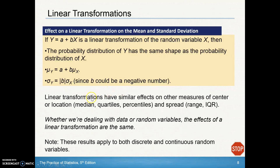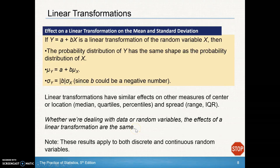In summary, linear transformations have similar effects on other measures of center — mean, quartiles, percentiles — and spread, such as standard deviation, range, and IQR. Whether we're dealing with data or random variables, the effects of a linear transformation are the same, so the same rules from Chapter 2 apply here in Chapter 6. These results apply to both discrete random variables, as in our example, and continuous random variables.